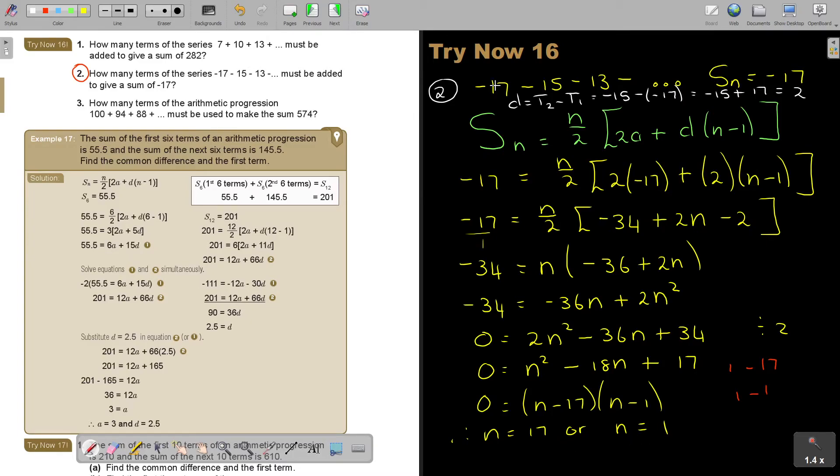Because in the first term, so if you just had one term, your sum total would have been negative 17. But if you continue adding up the 17 terms, your sum total will again be negative 17. So it's either one term or 17 terms.